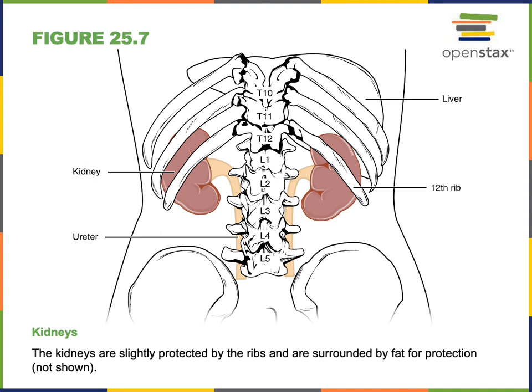The kidneys produce some hormones. The hormone erythropoietin is produced by the kidneys to stimulate the formation of erythrocytes in the red bone marrow. When the kidneys detect hypoxia — a low oxygen concentration — they secrete erythropoietin to stimulate erythropoiesis, the formation of erythrocytes in the red bone marrow.